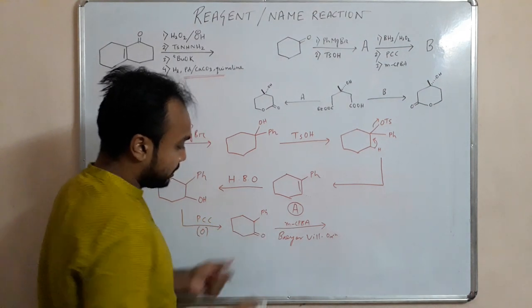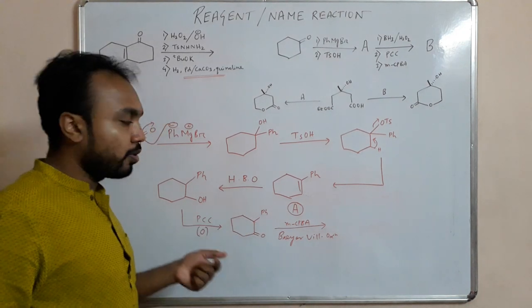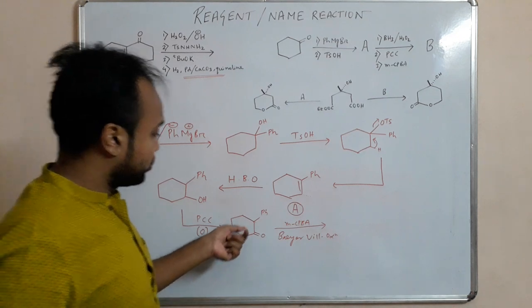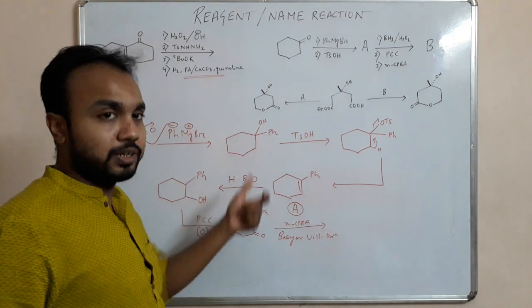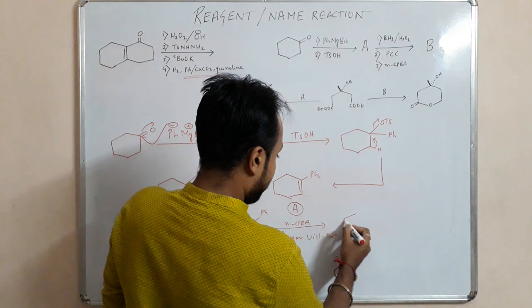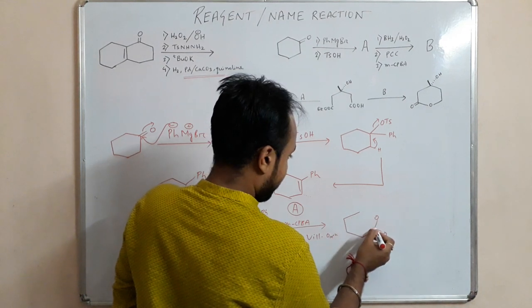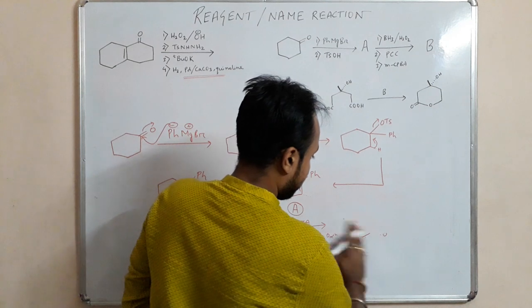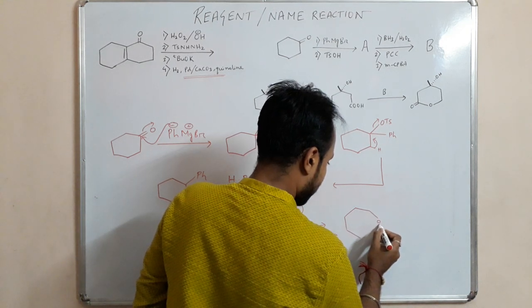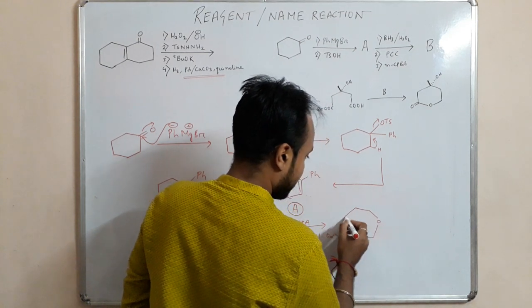So ketone is formed. Now we are adding MCPBA, meta chloro perbenzoic acid. So here we have ketone, here we have peracid, so what will happen? It is a Baeyer-Villiger oxidation. So where will the O insert? This is a tertiary carbon and this is a secondary carbon. So always tertiary carbon has more migratory aptitude than the secondary carbon. So since the tertiary carbon has more migratory aptitude, the O will get inserted here because the tertiary group will migrate to the oxygen.